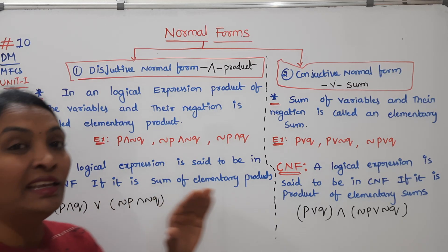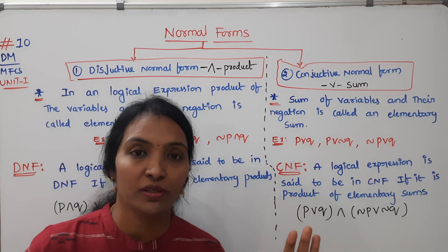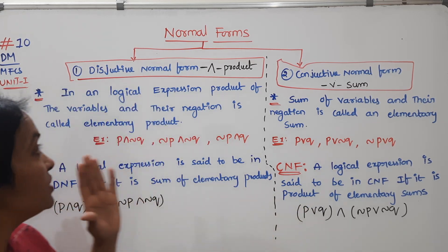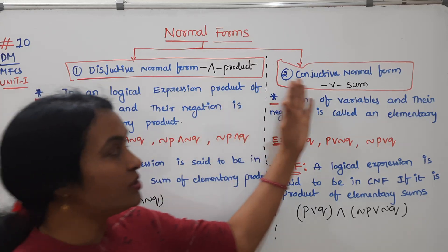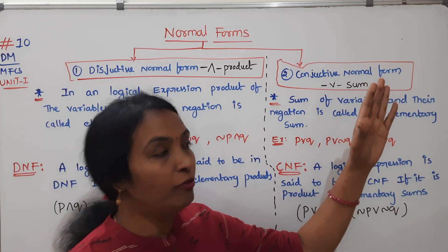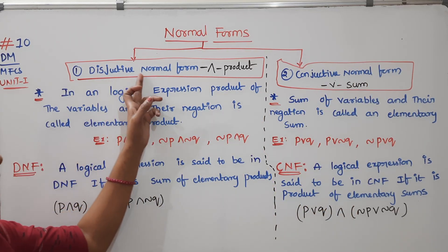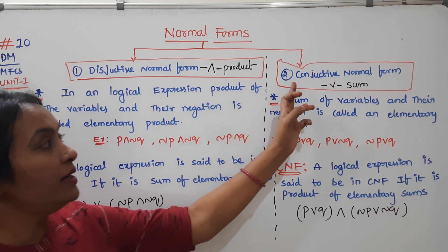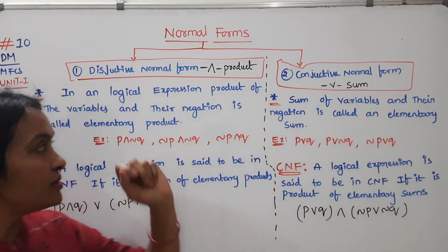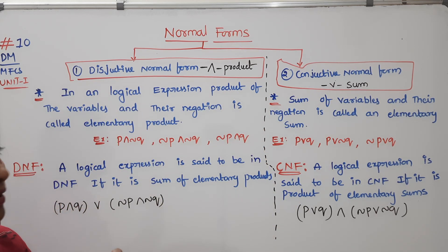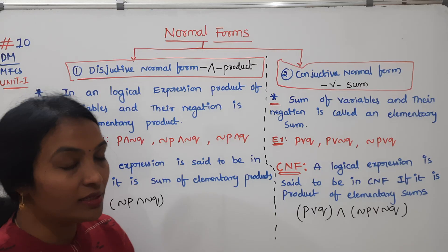In actual form, there are two types of normal forms: Disjunctive Normal Form and Conjunctive Normal Form. We call them DNF and CNF. Disjunctive normal form is relatively simple.